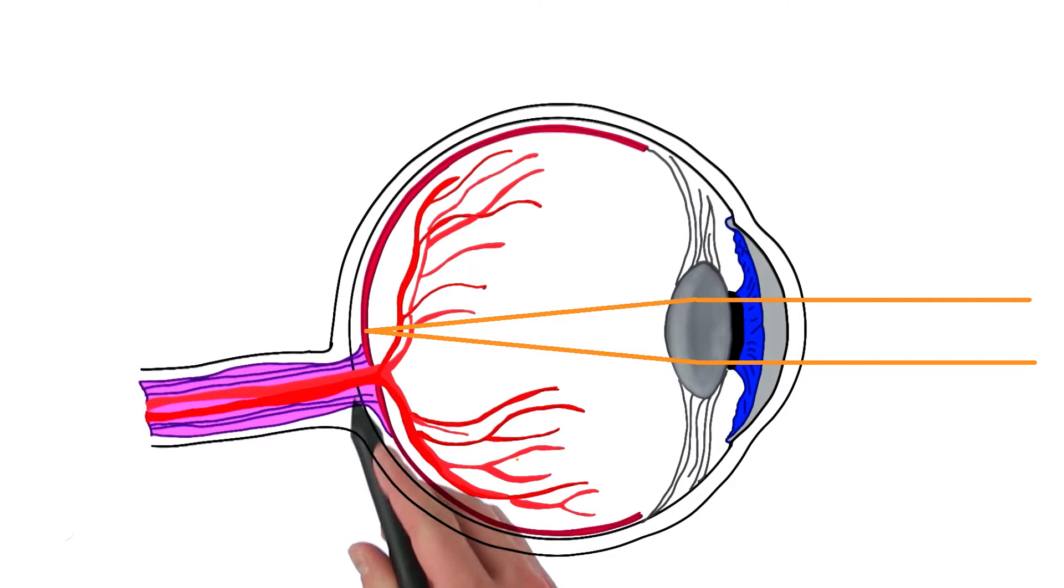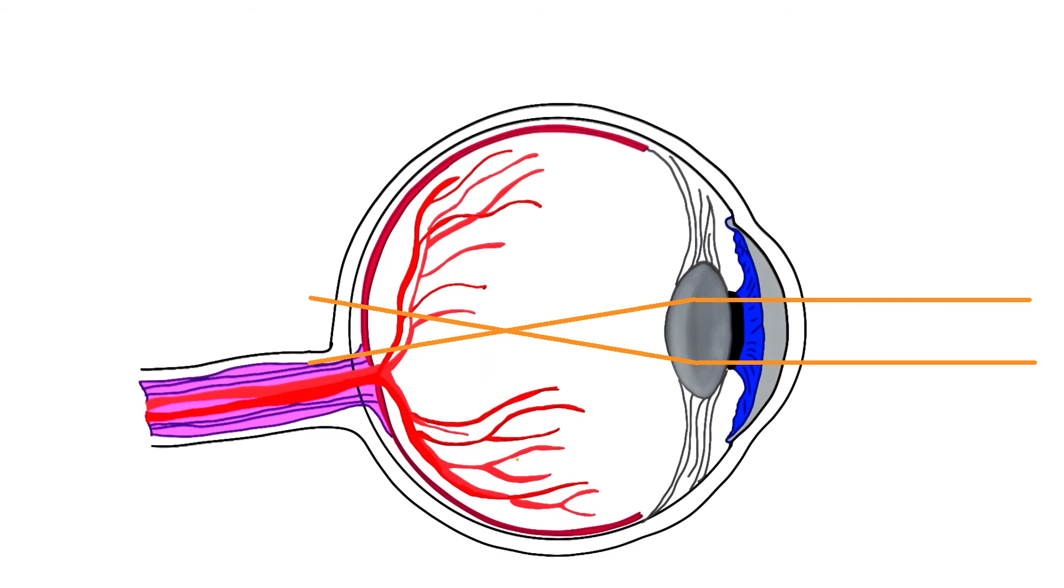And what about an eye that's not functioning so well? Well, in that case, the lens, this part here that actually bent the light and focused it, isn't doing its job right. In people who are nearsighted, the light actually gets bent too much by the lens. So maybe the focusing point would be somewhere here, which is not where the retina is. This results in blurry vision.